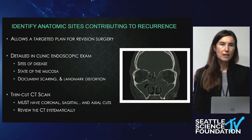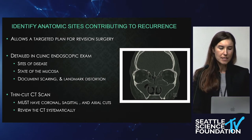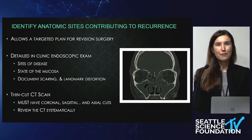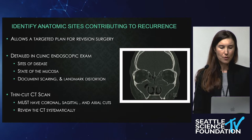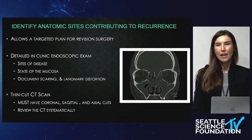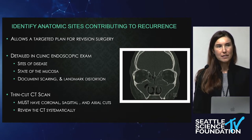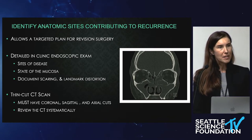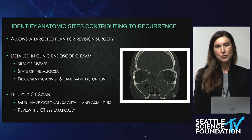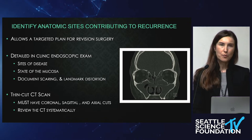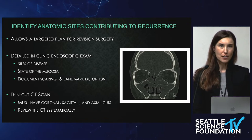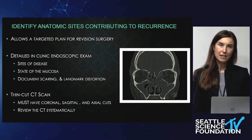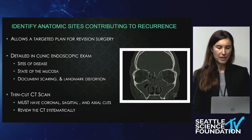You also want a thin-cut CT scan. And you must have all three different views — the coronal, the sagittal, and the axial cuts — because especially in revision surgery you're going to be able to approach all of those areas and create a good plan, and even a plan A and possibly a plan B.